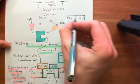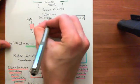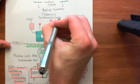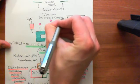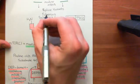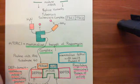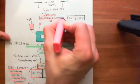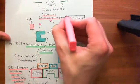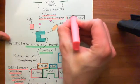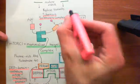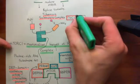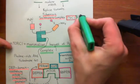Overall, the dimer of these two proteins is known as the tuberous sclerosis complex, abbreviated as TSC — T for tuberous, S for sclerosis, and C for complex. So we have TSC1 and TSC2 forming the tuberous sclerosis complex.